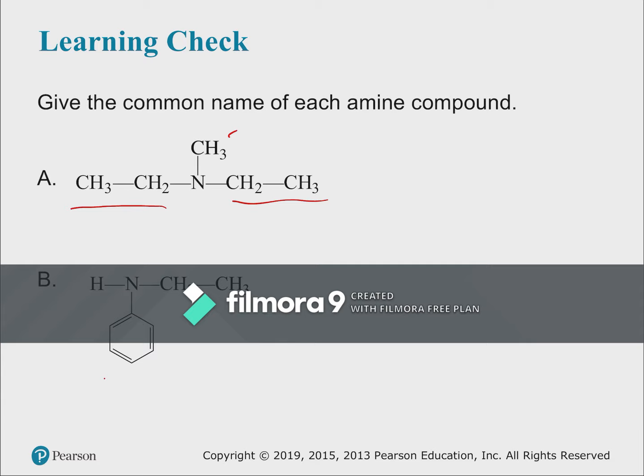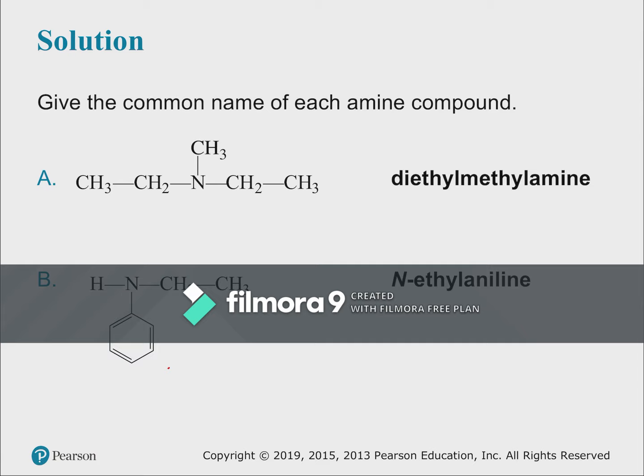For common names: a nitrogen with two ethyls and a methyl is diethylmethylamine. A nitrogen with a benzene group and an ethyl group is ethylphenylamine — or since benzene with NH2 is aniline, we can call it N-ethylaniline, using the common name for that aromatic amine.